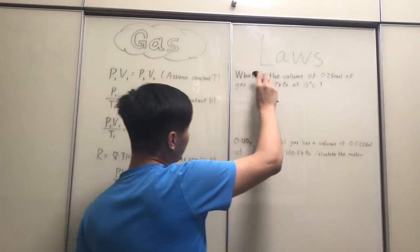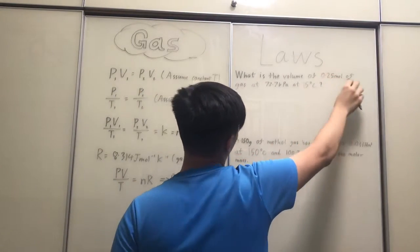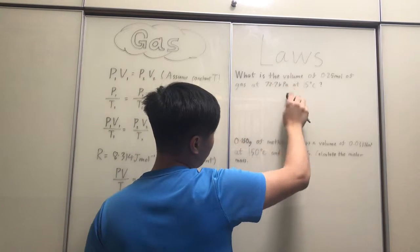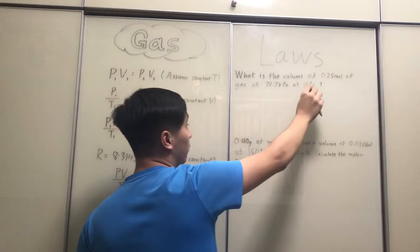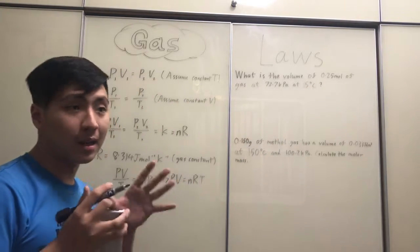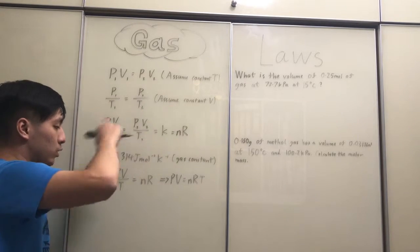What is the volume of 0.25 moles of a gas at 72.7 kilopascals, PA means pascals, at 15 degrees Celsius? So just a few things I want to clarify first about this equation.